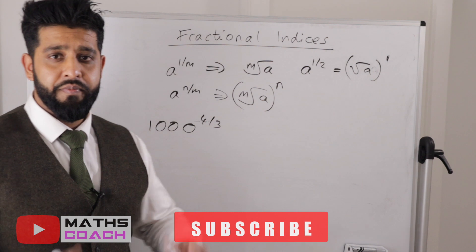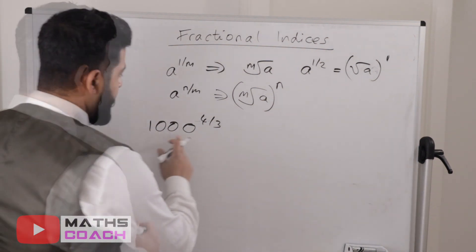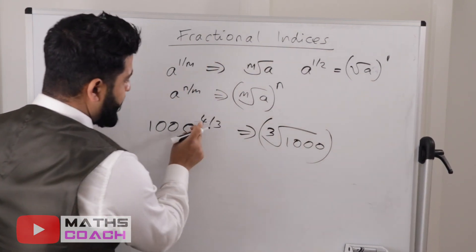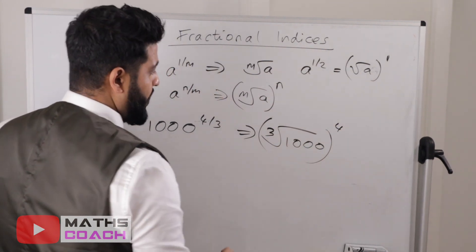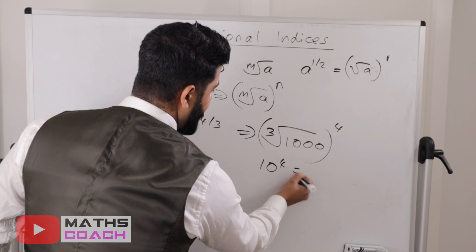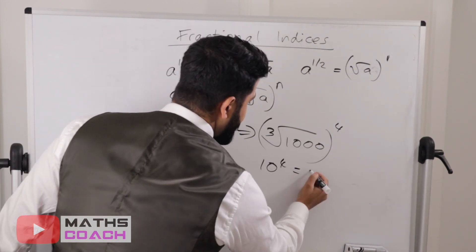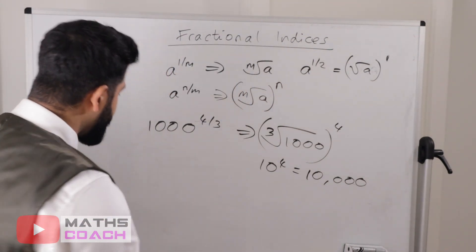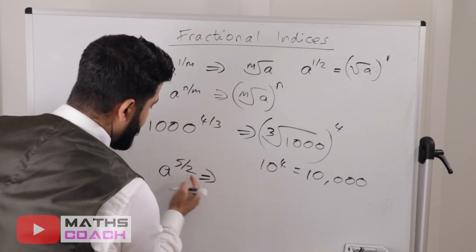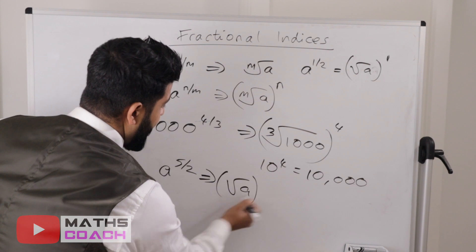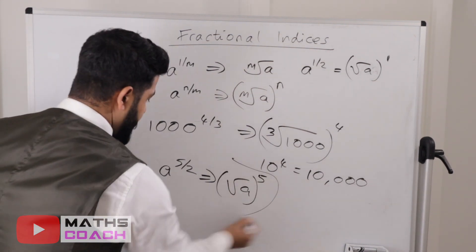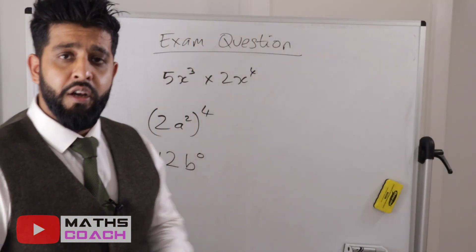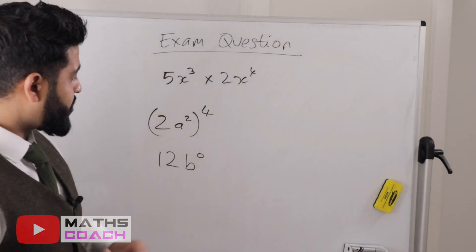Just to recap: if you have a to the power of 5 over 2, you take the square root of a and raise it to the power of 5. That illustrates what we've covered with fractional indices. Now let's move on to some exam-style questions — have a look at these questions and try them for yourself first, then pause the video and come back.